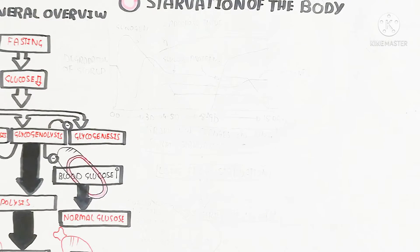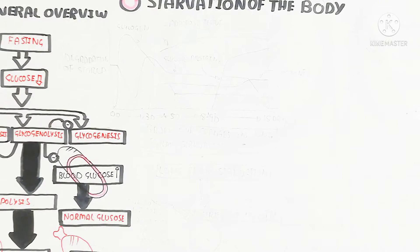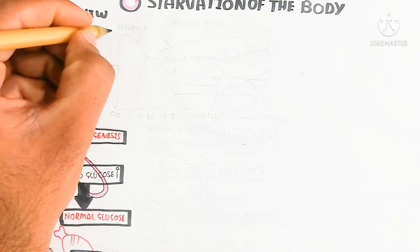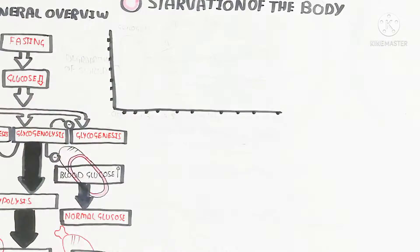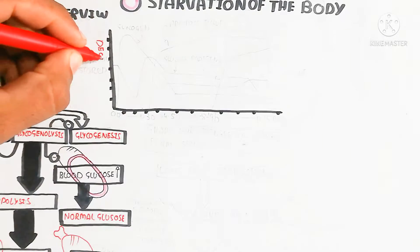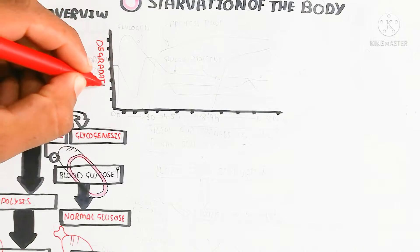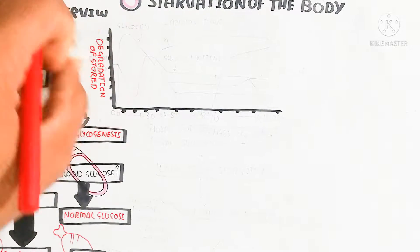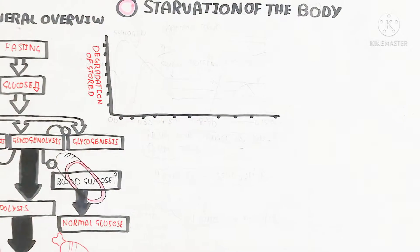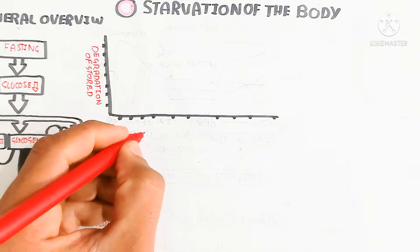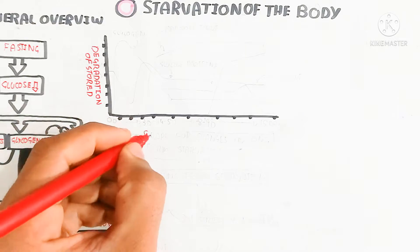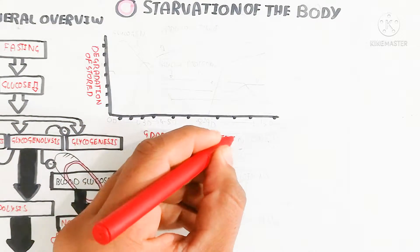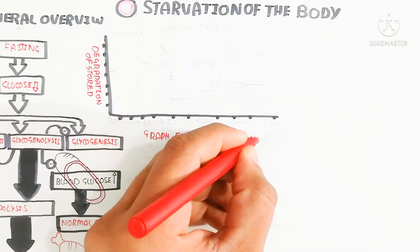Through this mechanism, fat loss, autophagy, tissue repair, and cell repair will occur, and that is why fasting and starvation are very important. Here we will understand the general overview of starvation of the body, which is relatively simple.